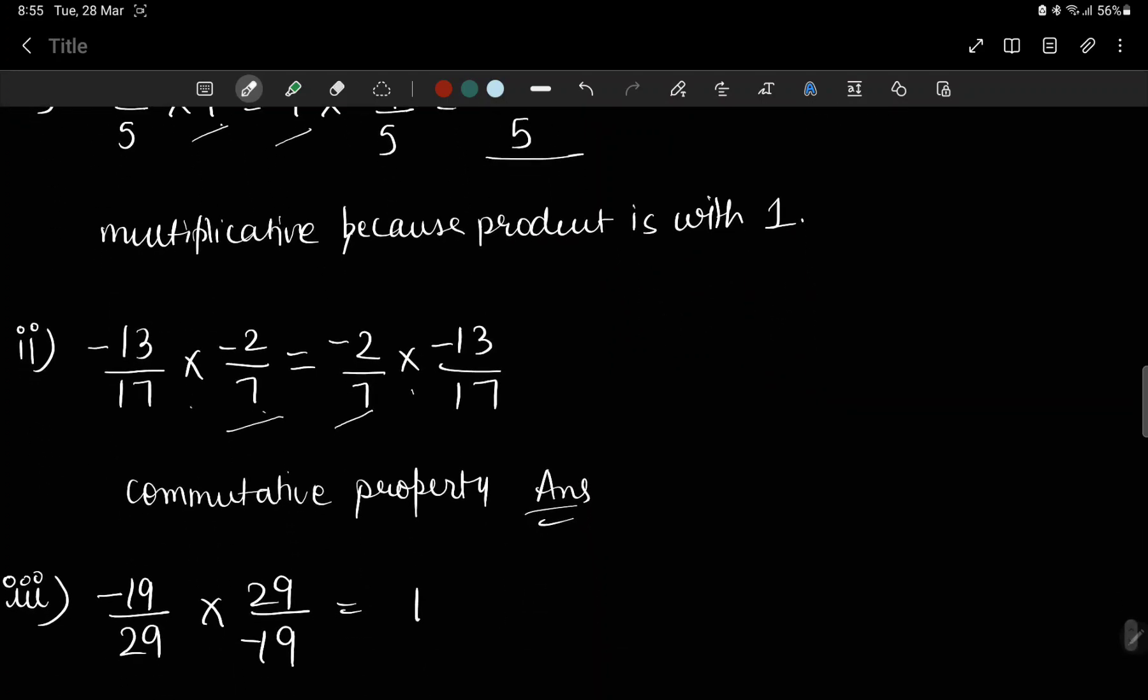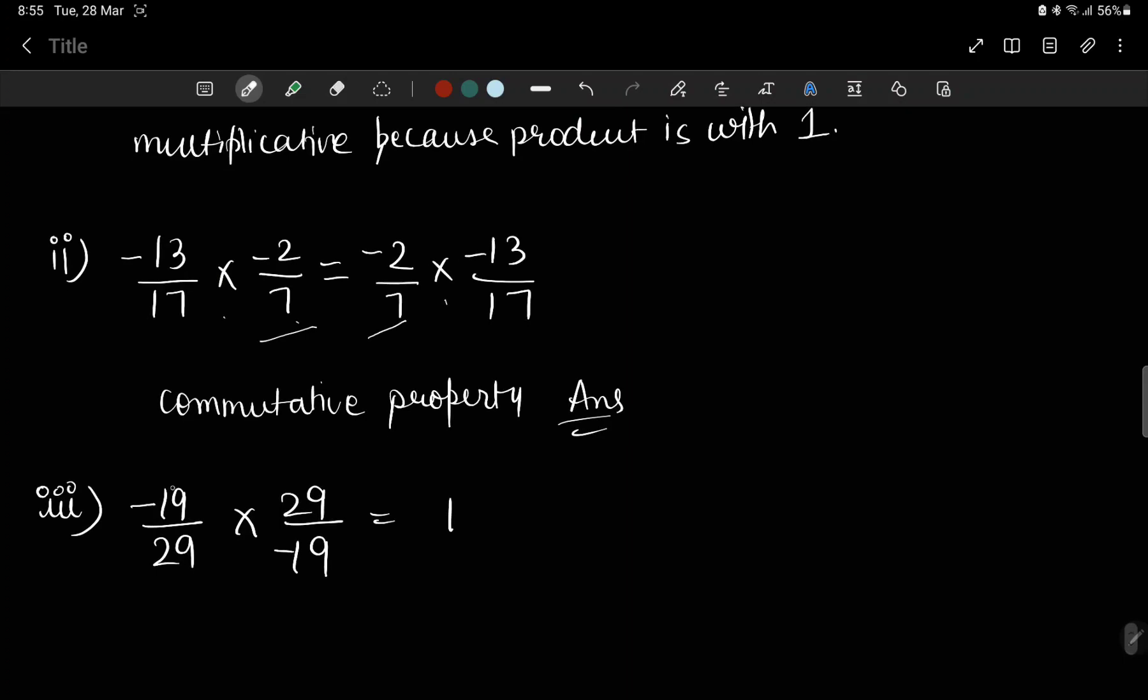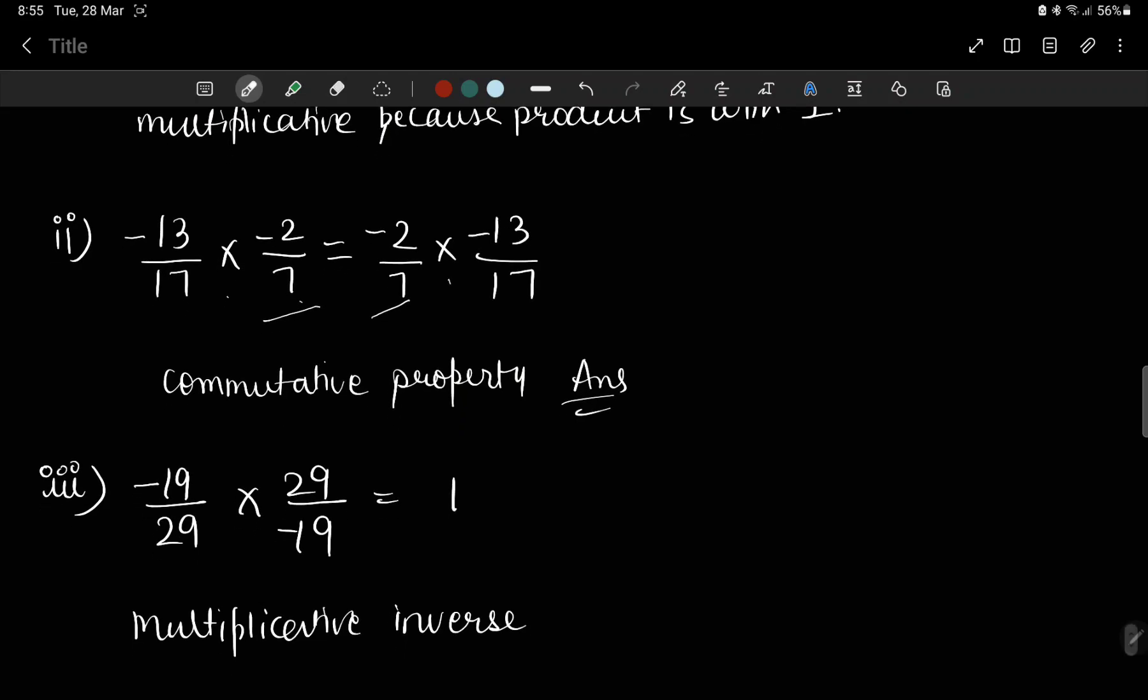Okay, now let's go to the next part. Let's see. What is it? It is 19 by 29 multiply by 29 by 19 is equal to 1. What is it? It is reciprocal. When it is reciprocal, which property is there? Multiplicative inverse. And the product is also 1.